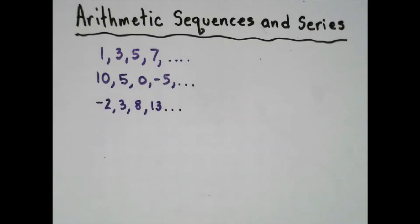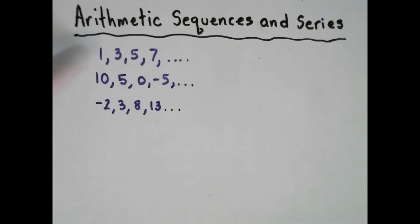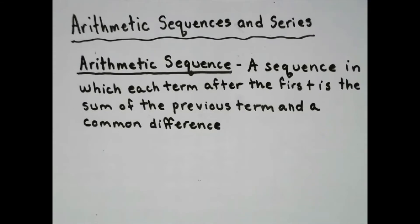Today we're going to talk about arithmetic sequences and series. Last time we talked about just sequences, and sequences can have lots of different formats. Arithmetic sequences are a specific type. Looking at three examples, you should start to see the patterns — one goes up by two every element, one goes down by five, one goes up by five. So all of these, you're either adding or subtracting to get to the next term.